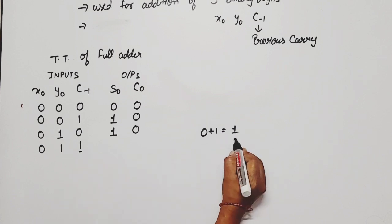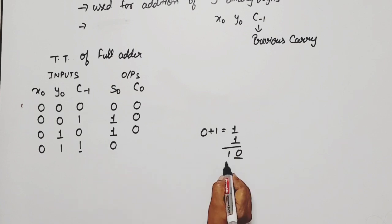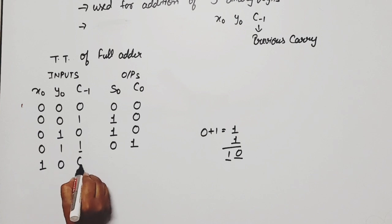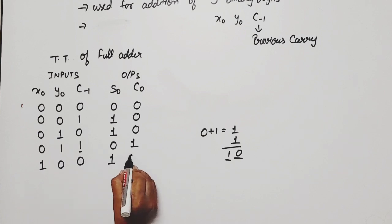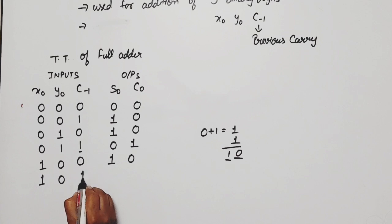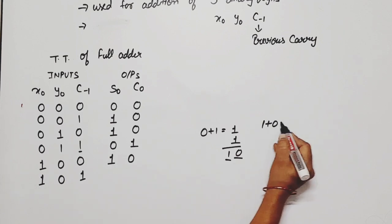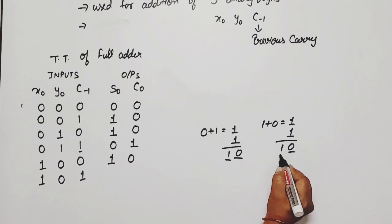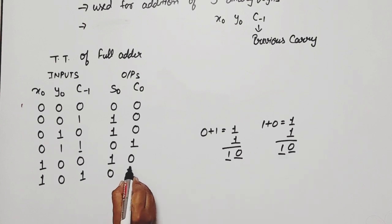Now 1, 0, 0. Sum will be 1, carry will be 0. Again 1, 0, 1. 1 plus 0 is equal to 1, and again 1 add. 1, 0. Sum is 0, carry is 1. Sum 0, carry 1. Now 1, 1, 0. Sum 0, carry 1.